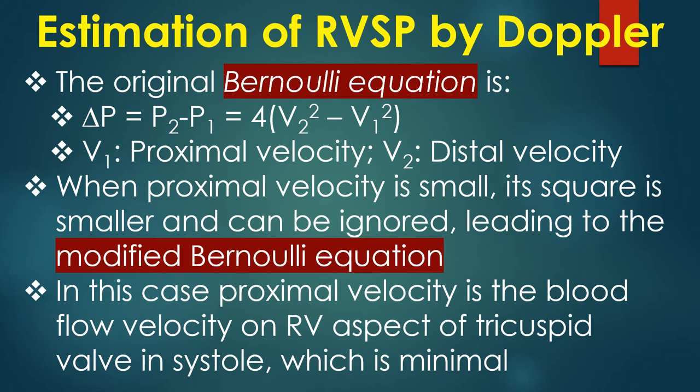V1 is the proximal velocity and V2 is the distal velocity. When proximal velocity is small, its square is smaller and can be ignored, leading to the modified equation. In this case, the proximal velocity is blood flow velocity on the right ventricular aspect of the tricuspid wall in systole, which is minimal.